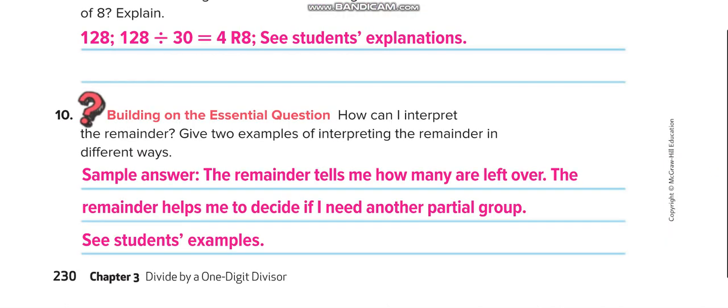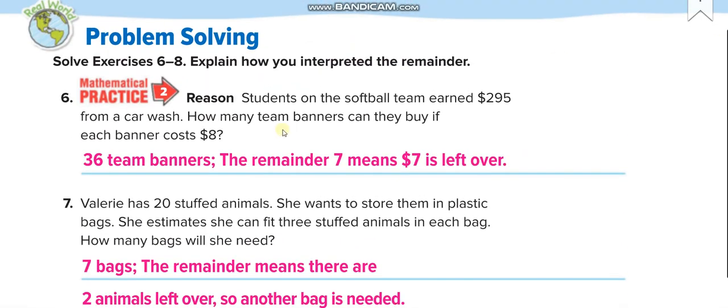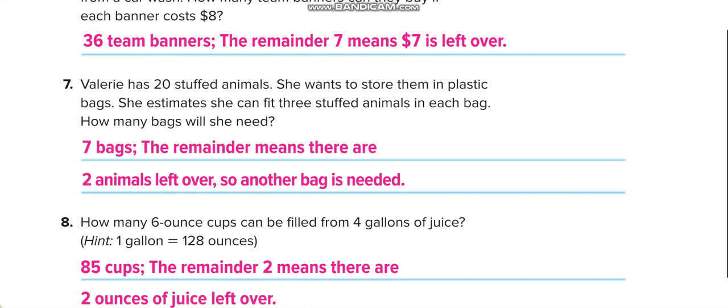Next one, students on softball team earn $295 from a car wash. How many team banners can they buy if each banner costs 8 dollars? When you divide 295 with 8, you will get 36, and remainder is 7. So the 7 dollars left over, so you can't buy another one, because each banner costs 8 dollars. So you are 1 dollar short.